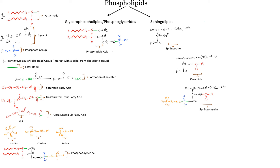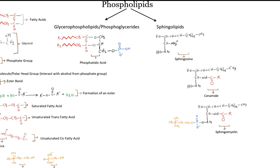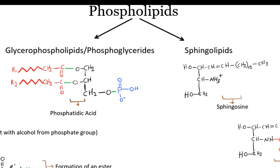Phospholipids are the major component of cell membrane and there are two types of phospholipids. First is the glycerophospholipids or phosphoglyceride, and the second is the sphingolipid.